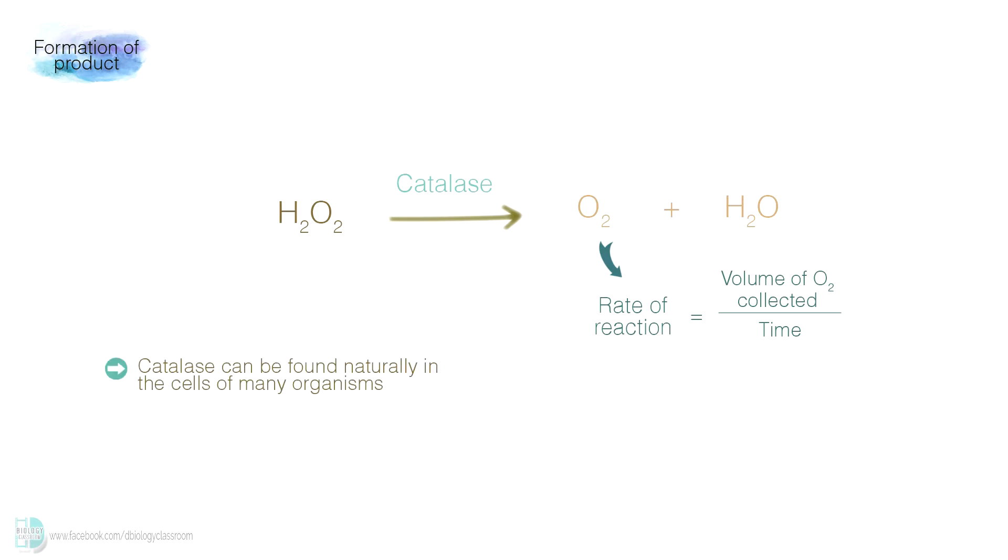Catalase can be found naturally in the cells of many organisms. A simple way to obtain it is by using potato. Here is the procedure to carry out the experiment.